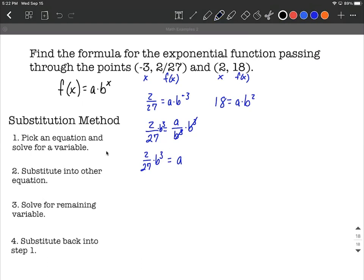From there, we're going to take that value and substitute into the other equation. I'm going to replace the a in the other equation with what we just found it to equal. So in a's place, we're going to say two twenty-sevenths times b cubed replaces the a.